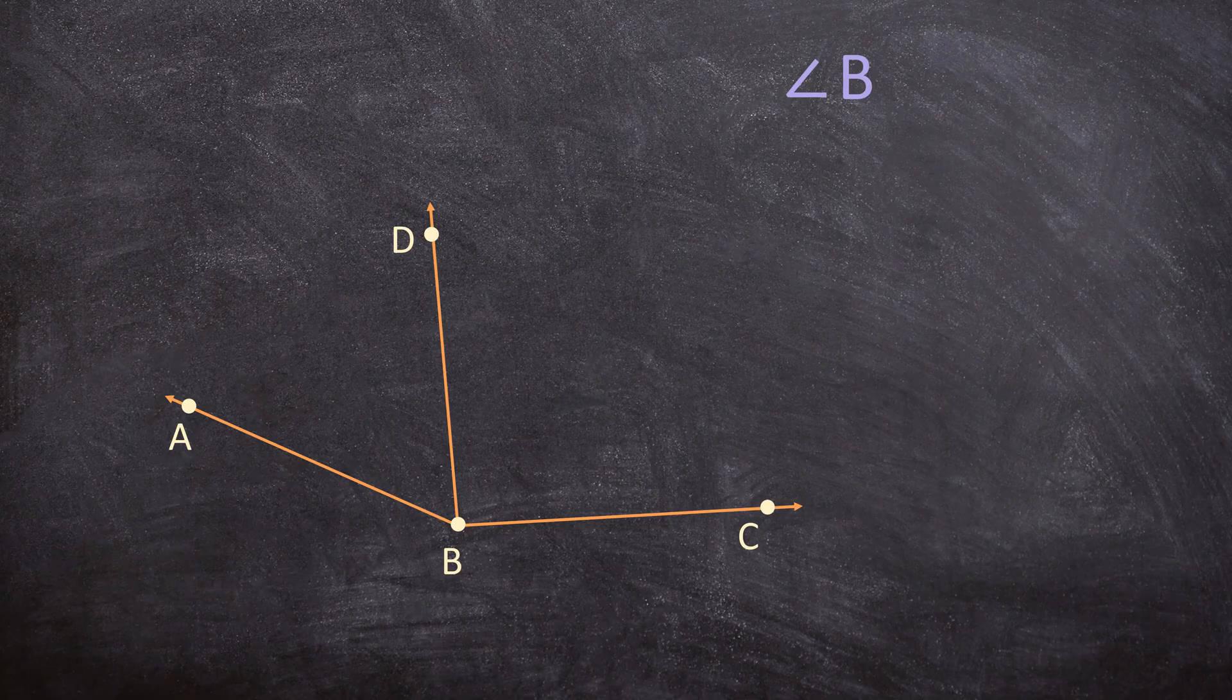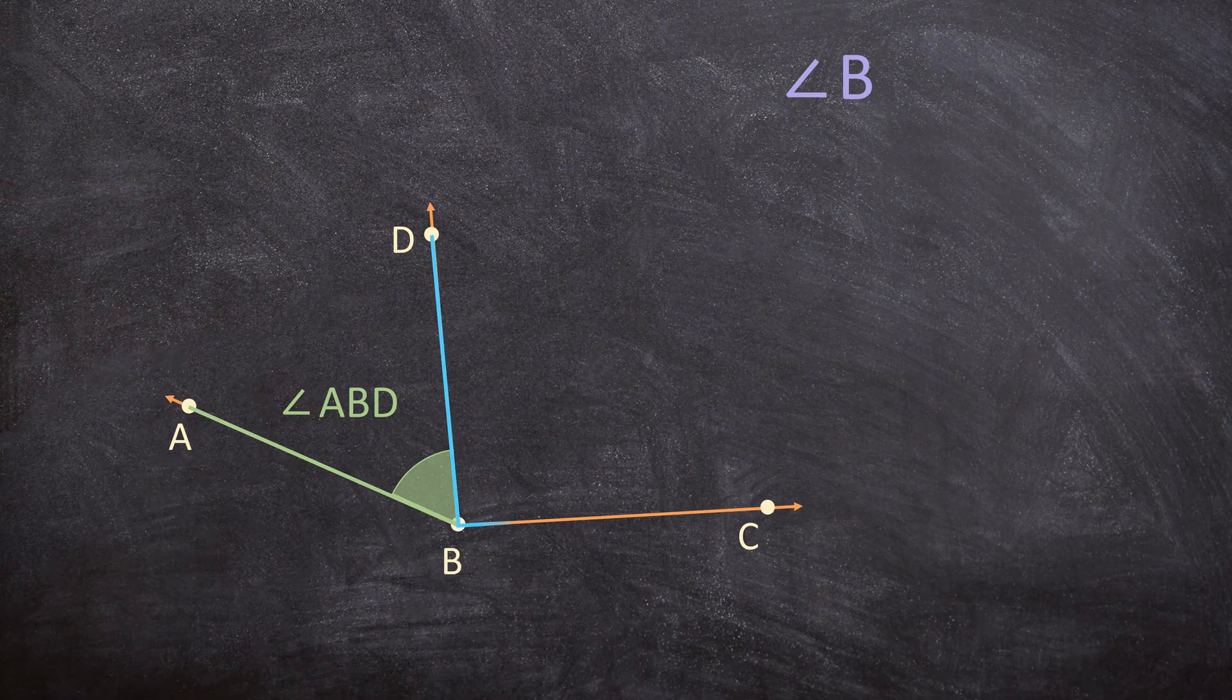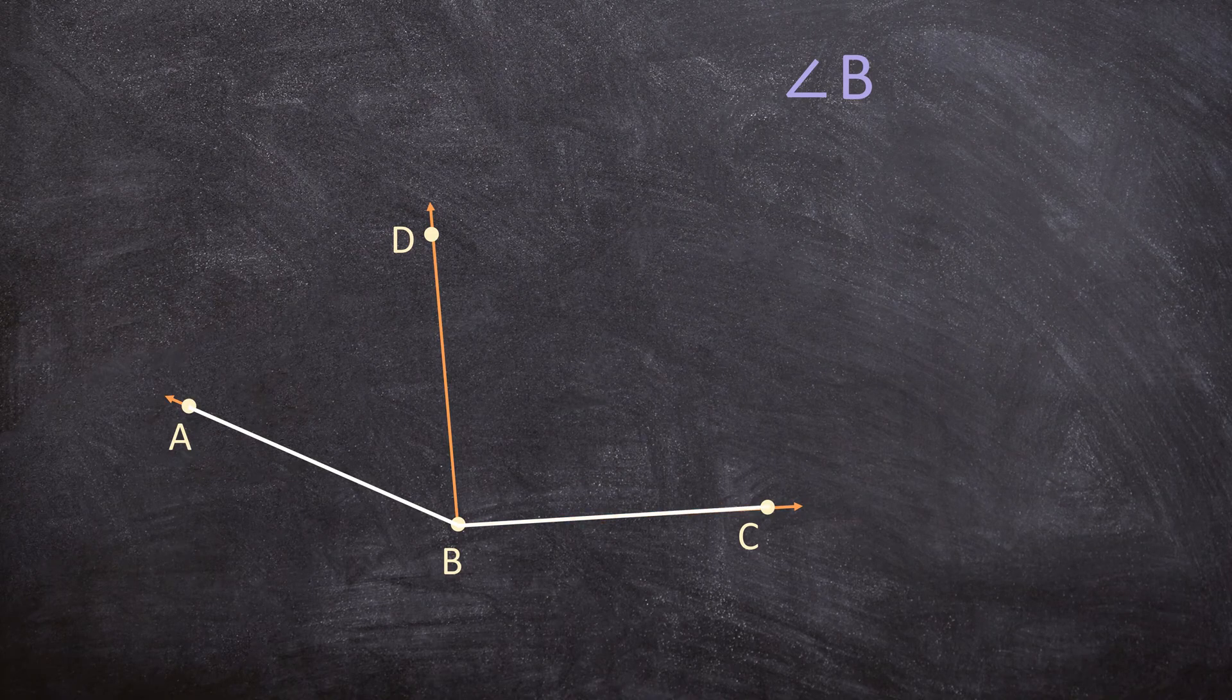You can be talking about angle ABD which is this angle or you can be talking about DBC which is this angle. Or the last angle you can also be talking about angle ABC which will be this whole angle.